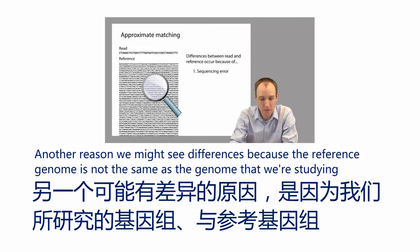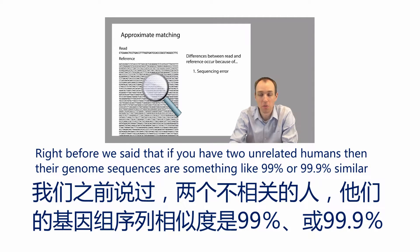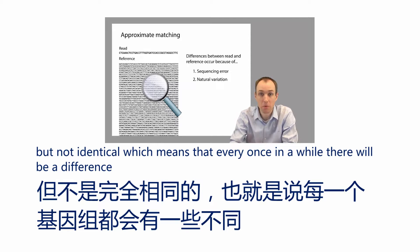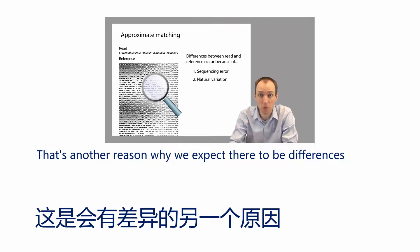Another reason we might see differences is because the reference genome is not the same as the genome that we're studying. If you have two unrelated humans, their genome sequences are something like 99.8% or 99.9% similar, but not identical. This means that every once in a while there will be a difference between a base in the sequencing read and a base in the reference genome.